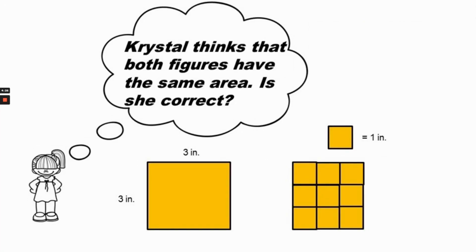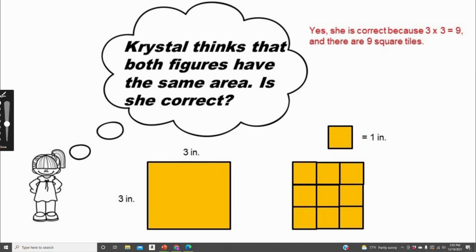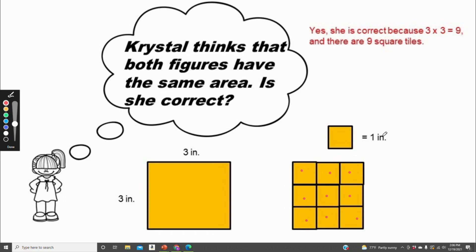Crystal thinks that both of these figures have the same area. Is she correct? Yes, she is correct because three times three equals nine, and there are three, six, nine tiles here. Both are measured in inches, so they're both nine square inches.